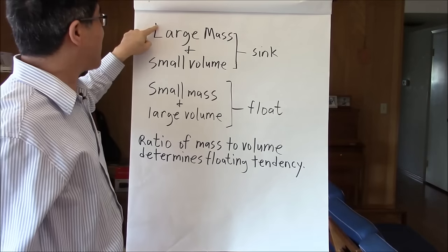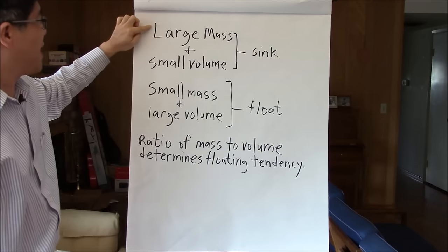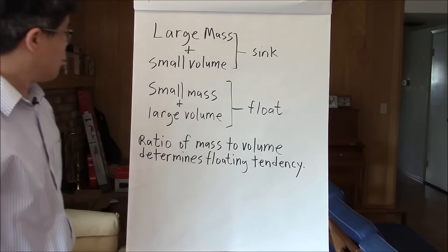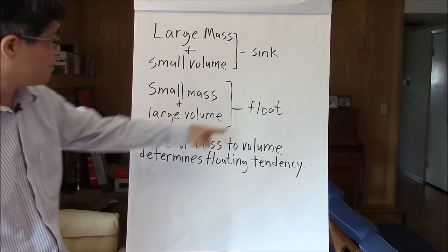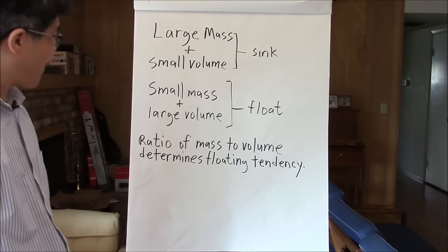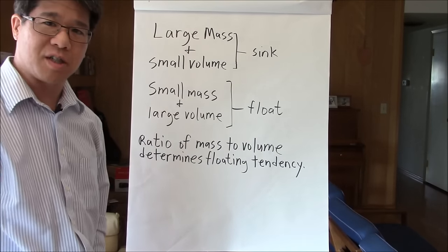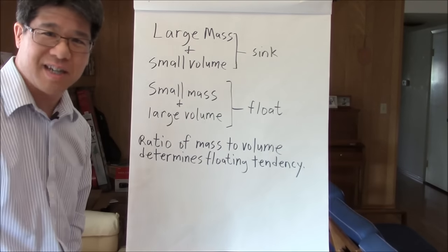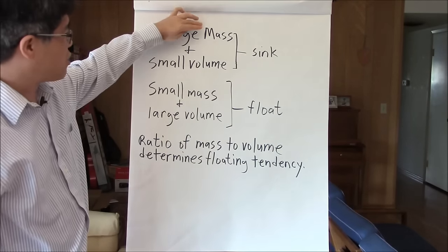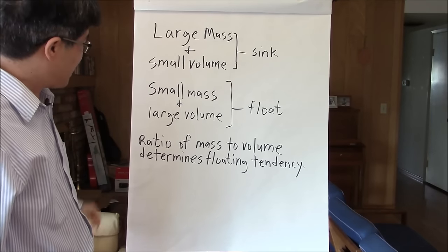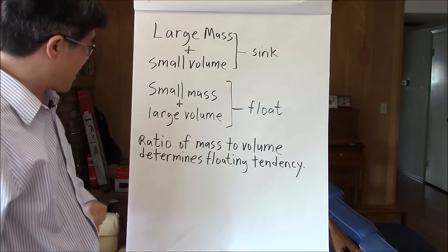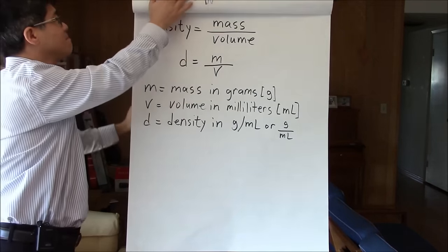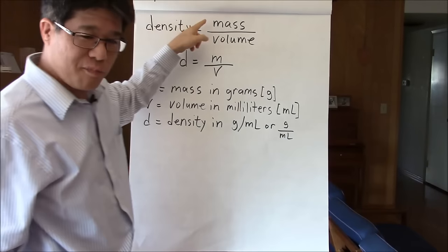If an object has a large mass but a small volume, both factors cause it to sink. If it has a small mass and a large volume, it tends to float. Both factors play a role in whether something sinks or floats. The ratio of mass to volume determines its floating tendency — large mass relative to volume tends to sink, and large volume relative to mass tends to float.